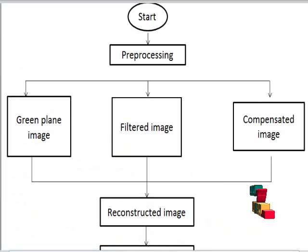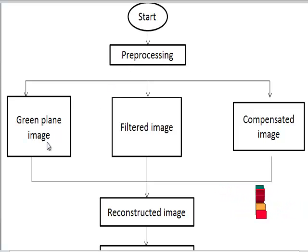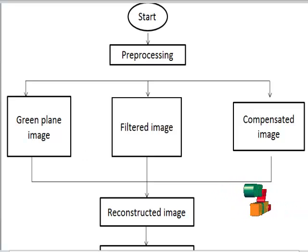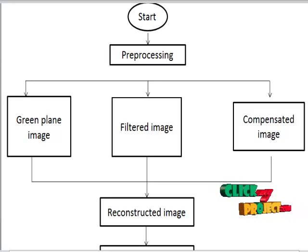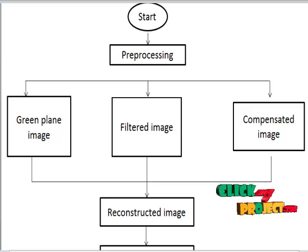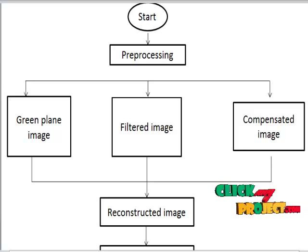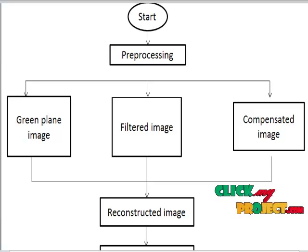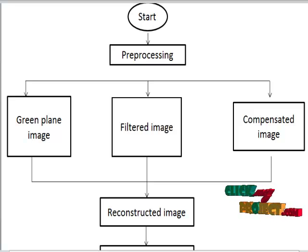Let us see the flow diagram for this process. First, preprocessing — here we are getting green plane image, filtered image, and compensated image. The input image is represented in green plane image. The green plane image reduces the effect of intensity variation. Then the image is filtered using median filter for smoothening the image.